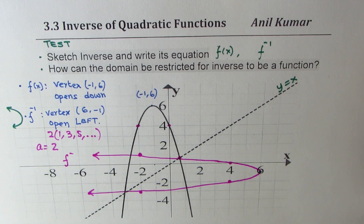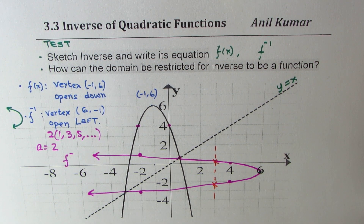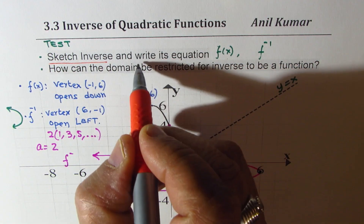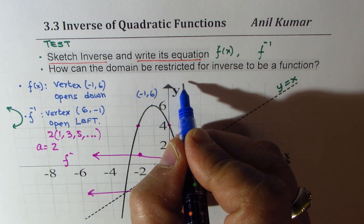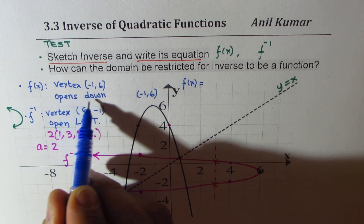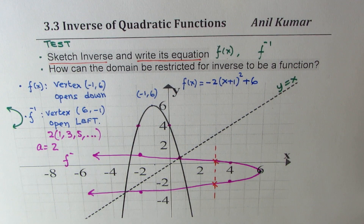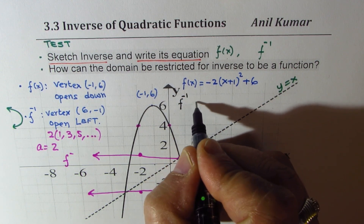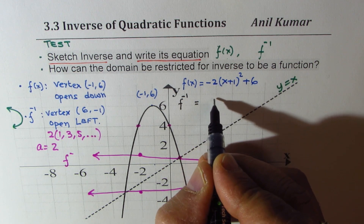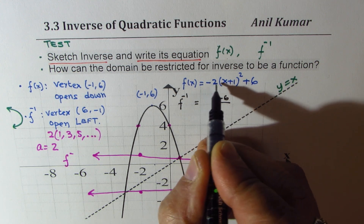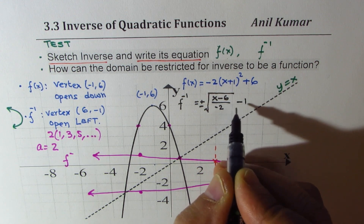This inverse is clearly not a function, since a vertical line intersects it at two points. Now we write the equations. For the function: f(x) = −2(x + 1)² + 6, since a = −2 (opens downward) and vertex is at (−1, 6). For the inverse, solve for x: first subtract 6 (giving x − 6), then divide by −2, then take the square root with plus and minus, then subtract 1. So f⁻¹ = ±√((x − 6) / −2) − 1.